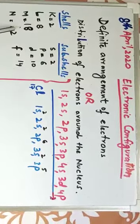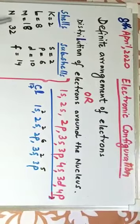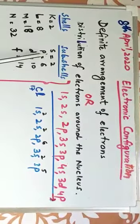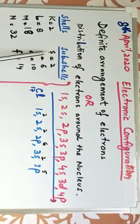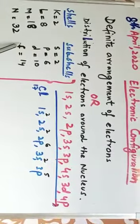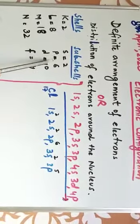Third shell M can accommodate 18 electrons and N 32. In shells there are subshells. Subshells are named S, P, D, F. This is also known as orbitals. S orbital can hold two electrons, P six electrons.